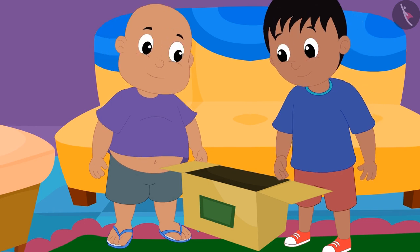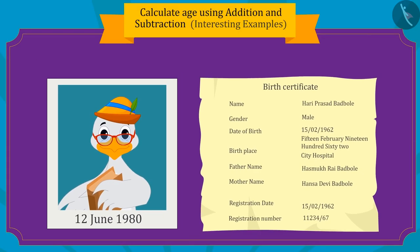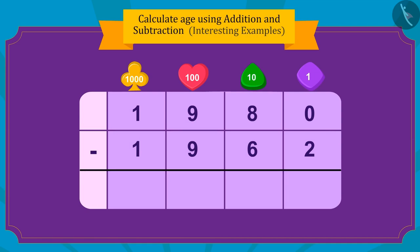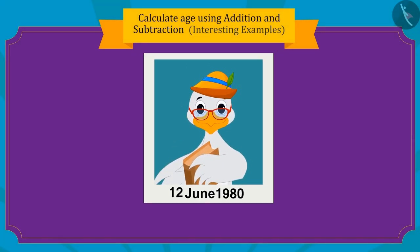Now Raju found another picture of uncle where uncle is seen in his college. The date written below the college picture is 12th June 1980. Children, can you tell how old uncle was in that picture? Yes — if we subtract 1962 from 1980, we can find uncle's age. Uncle's age in this picture is 18 years.